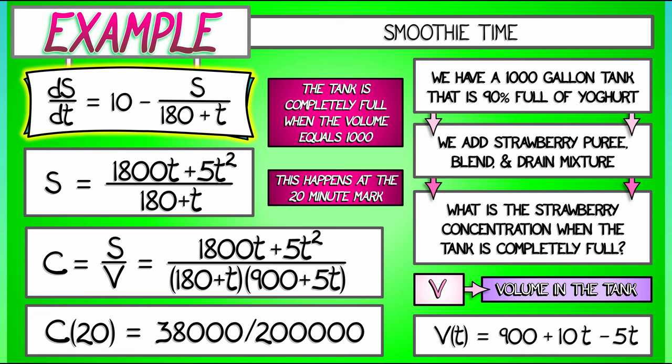And there's a lot of cancellation and simplification that goes on there to give a final answer of 19 divided by 100, that is 19 percent. So when the tank is full, we have a 19 percent strawberry smoothie, thanks in this case to an integrating factor.